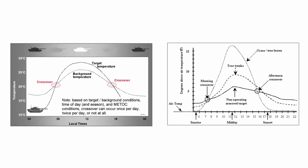If your UAS has a thermal sensor on board, consider thermal crossover. This phenomenon occurs when a cold object warms up as the sun rises — at some point, the temperature difference between the object and the background will not be great enough for the sensor to distinguish between them, making the object almost invisible to the sensor. This happens twice during the day: as it's heating up and again as it's cooling off. The chart shows tree trunks as the thick dashed line and grass and tree leaves as the dotted line with a sharp spike — grass and tree leaves cool off faster than tree trunks. The same principles apply when looking for items of clothing or a person.